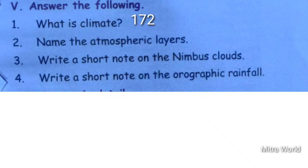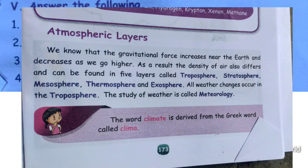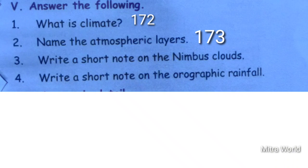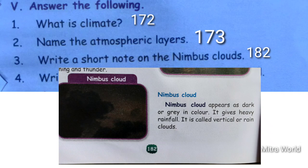Second question — name the atmospheric layers. Take page number 173 for the atmospheric layers. Third question — nimbus clouds appear as dark or grey in colour. They give heavy rainfall and are called vertical or rain clouds.